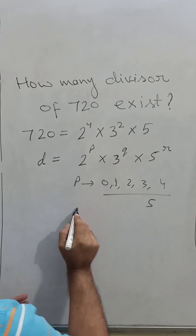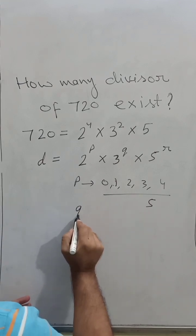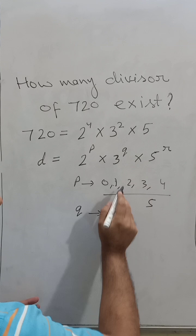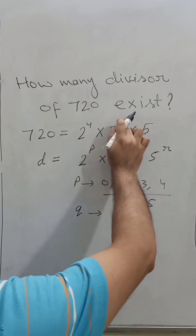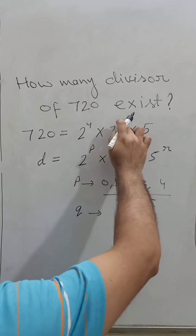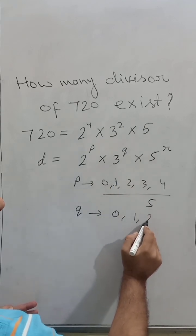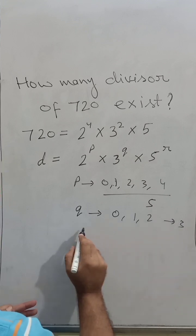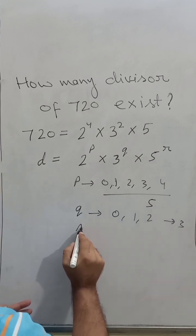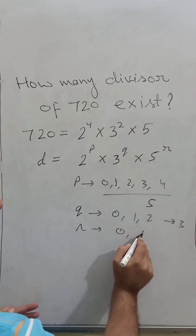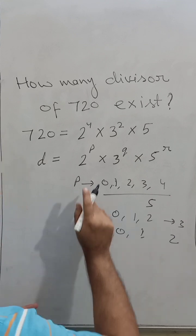And like this for Q, it is 2, so 0, 1, 2 means 3 possibilities. And like this for R, there is 0 and 1, means 2 possibilities.